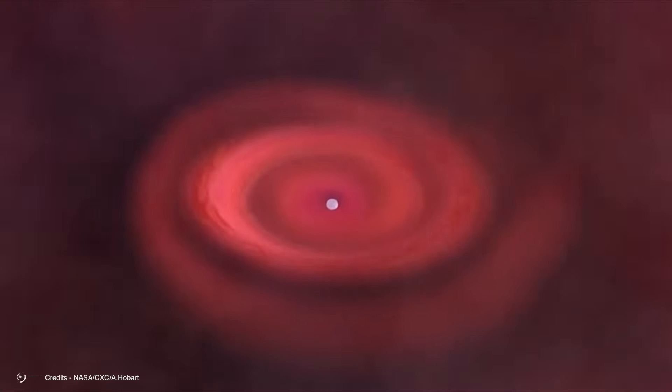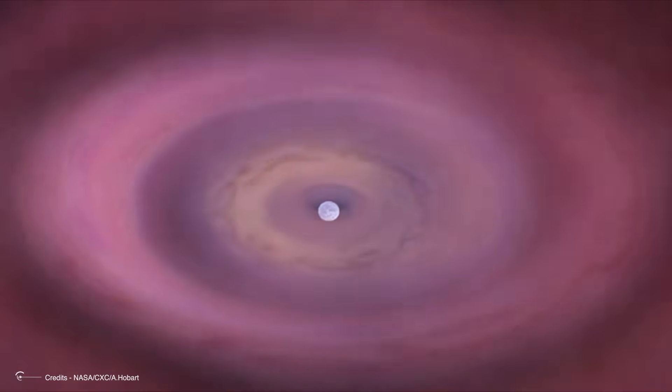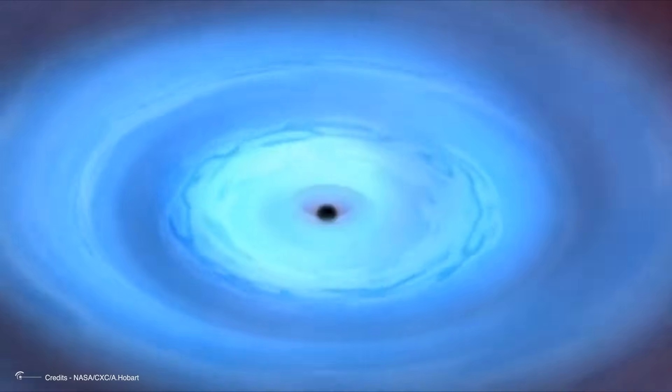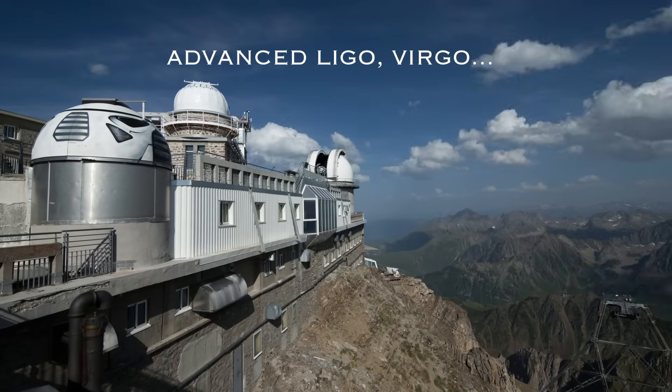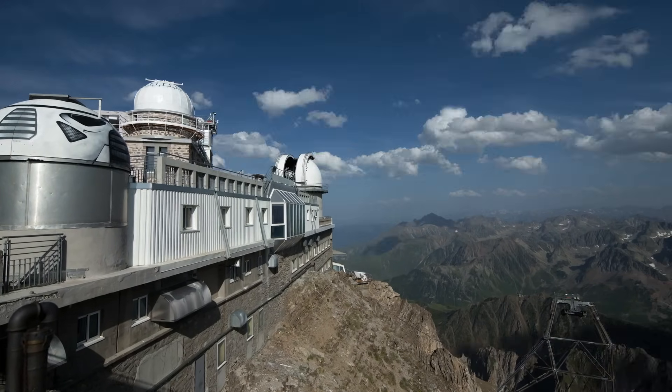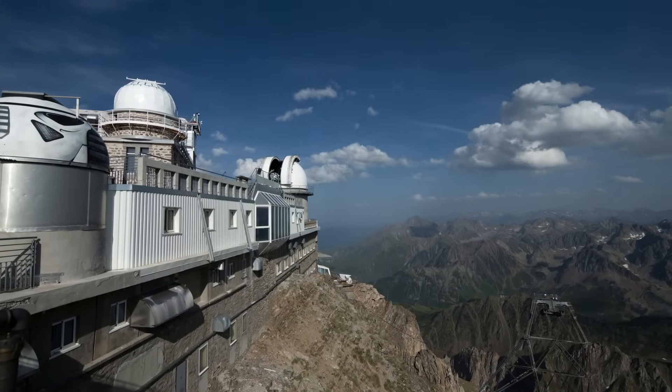The moment of collapse will generate an extraordinary gravitational wave burst—a literal ripple in space-time that will spread outward at the speed of light. Advanced LIGO, VIRGO, and the forthcoming Einstein Telescope are being calibrated specifically to detect this unique gravitational wave signature.